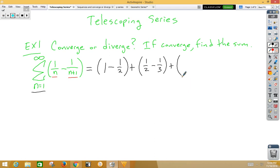Plugging in n=3, we get positive 1/3 and negative 1/4. Plugging in n=4, we get positive 1/4 and negative 1/5.